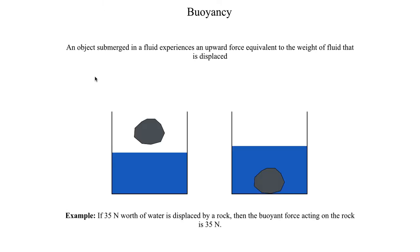This might seem like mumbo jumbo, so let's take a look at an example. Consider a rock in a container full of water. If we submerge that rock and it displaces 35 newtons worth of water — so if you took the displaced water and weighed it you'd get 35 newtons — then by the concept of buoyancy the buoyant force acting on the rock, the force pushing the rock back up to the surface, is equal to 35 newtons.